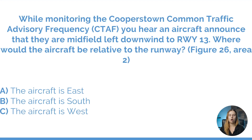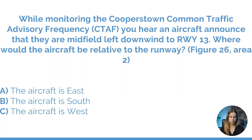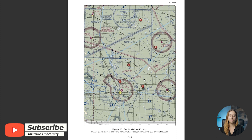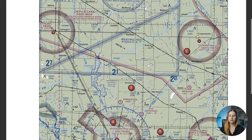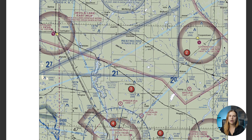While monitoring the Cooperstown Common Traffic Advisory Frequency, also known as the CTAF, you hear an aircraft announce that they are midfield, left downwind to runway 13. Where would the aircraft be relative to the runway? Refer to figure 26, area 2. Here we have figure 26 in the supplement book and we're looking for area 2, identified by the red circle with the white 2. We'll zoom in on Cooperstown — the aircraft is flying on the left downwind, runway 13.